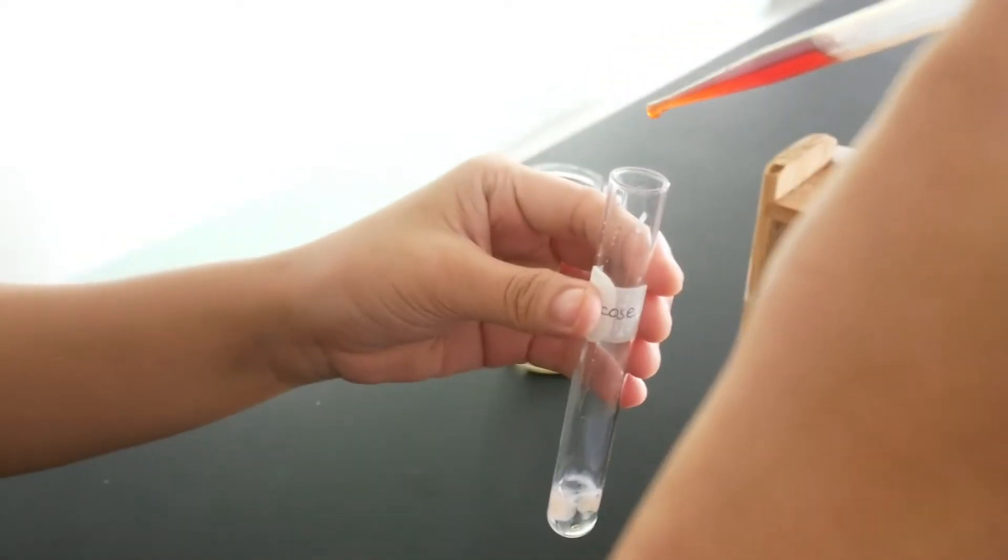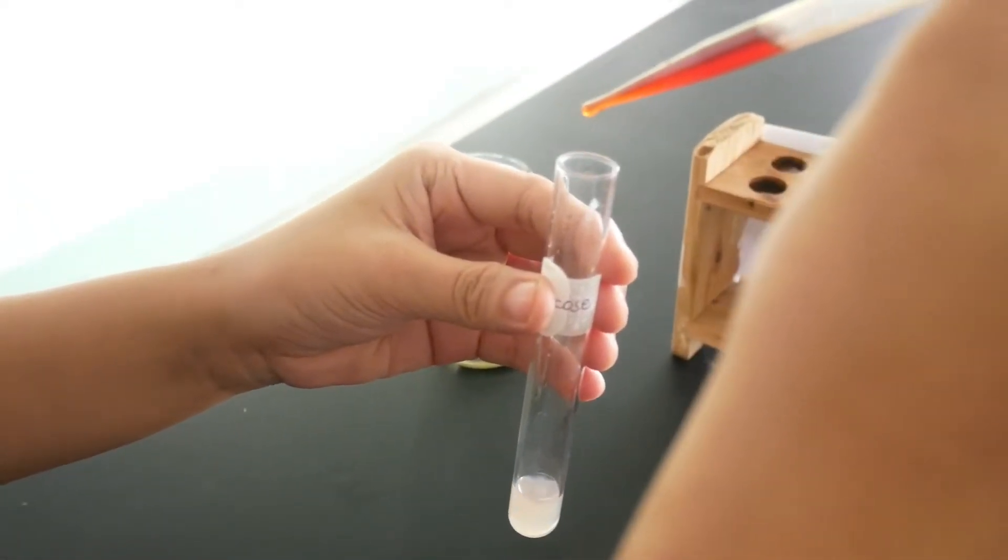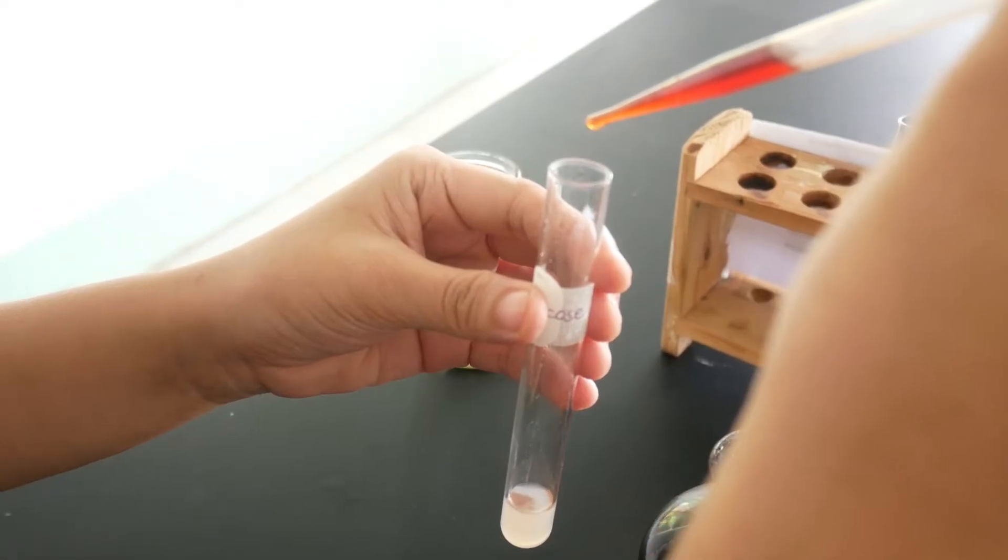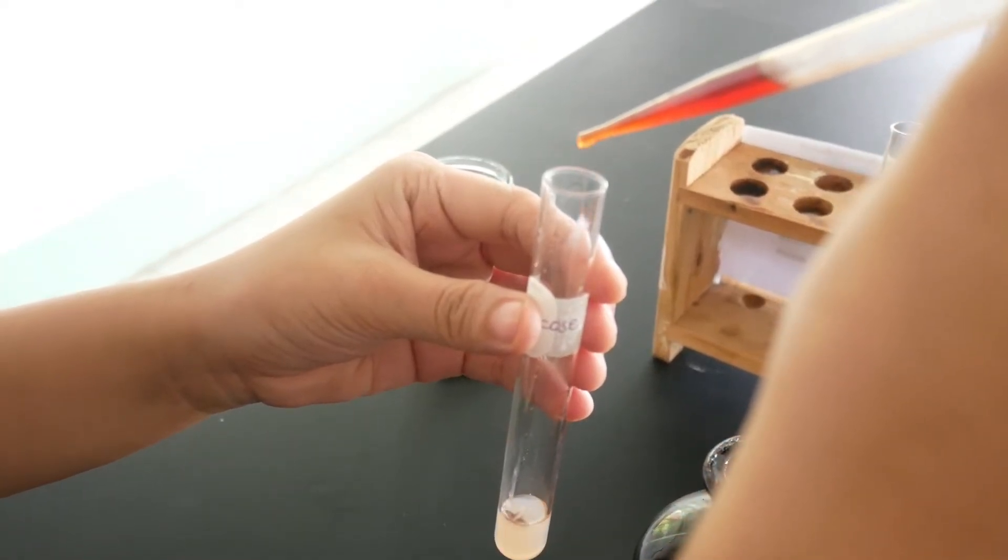First, we need about 2ml of each carbohydrate solution in our 4 test tubes. And then we will be adding 10 drops of Molisch Reagent to each carbohydrate sample and then mix thoroughly.